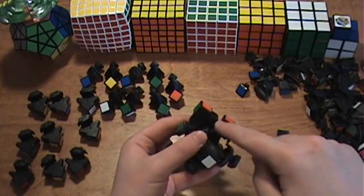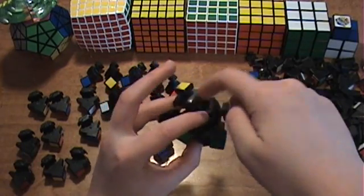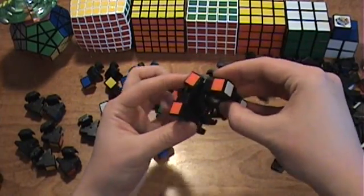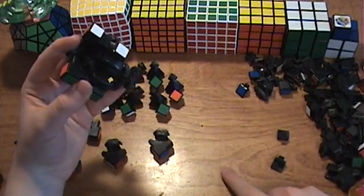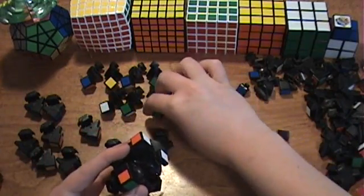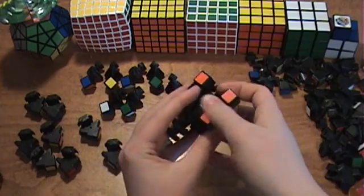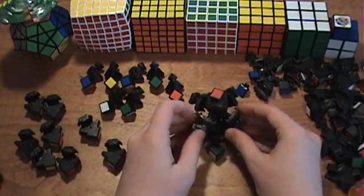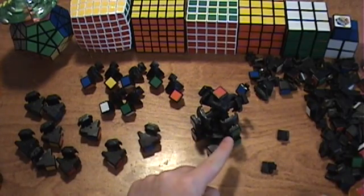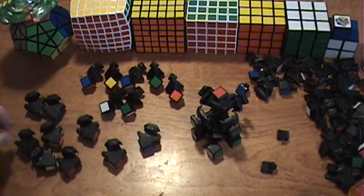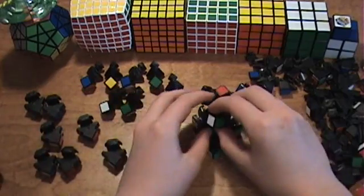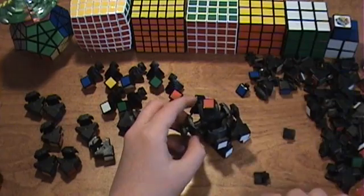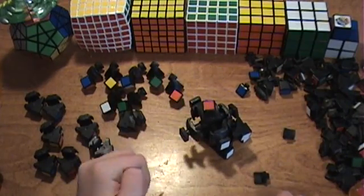And then find an edge piece that will fit here, here, there, or there. So I got an orange white one and fit it there. Now I need to get the orange green and white one. And then fit that into place. And then get the green white edge. And fit that into place just like that. And then just basically continue doing that until you just got the top layer to go.